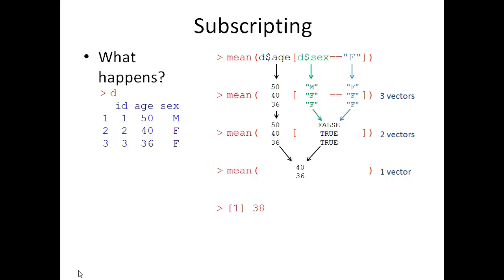And to demonstrate I've prepared a small dataset here with three columns: id, age, and sex, and three observations or rows.